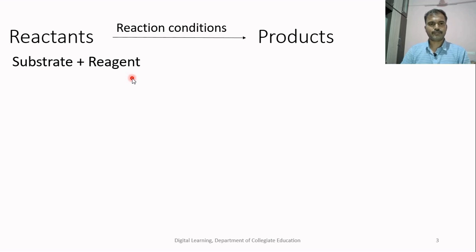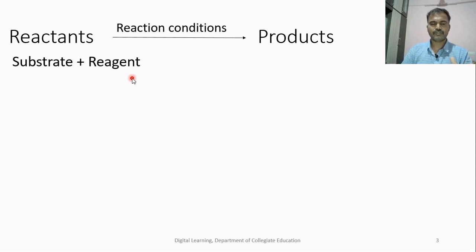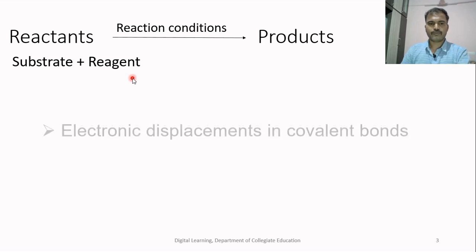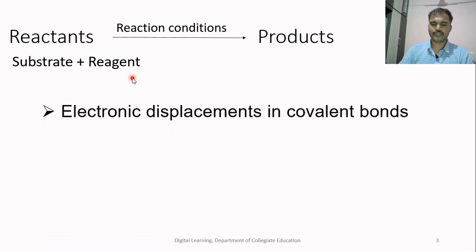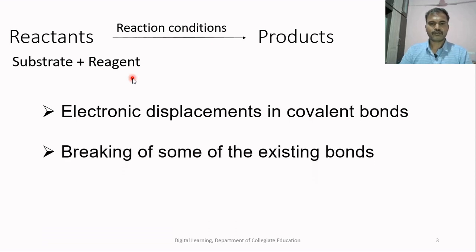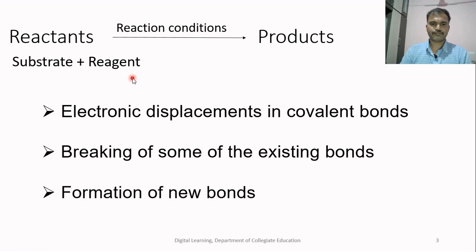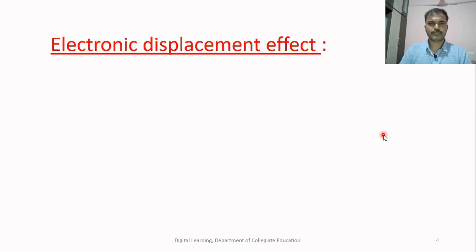It is important to know not only what happens in a chemical reaction, but also how it happens. An organic reaction essentially involves changes in the covalent bond present in a reacting molecule. These changes may involve electronic displacements in covalent bonds, breaking of some existing bonds and formation of new bonds. This is what we call electronic displacement effect.